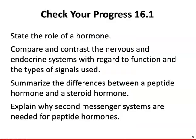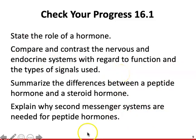To summarize, you should be able to state the role of a hormone and compare and contrast the nervous and endocrine systems with regard to function and the types of signals used. You should also be able to summarize the differences between peptide hormones and steroid hormones. Regarding second messenger systems: peptide hormones do not enter the cell, so instead they trigger a cascade of events — that's why they need a secondary messenger system found within the cell, because they cannot cross the cell membrane themselves. That's it for chapter 16.1. Please let me know if you have any questions or comments.